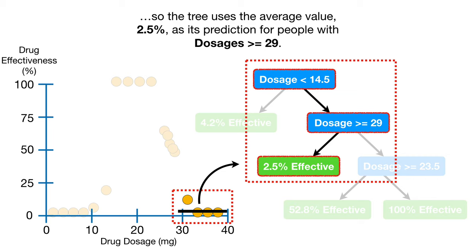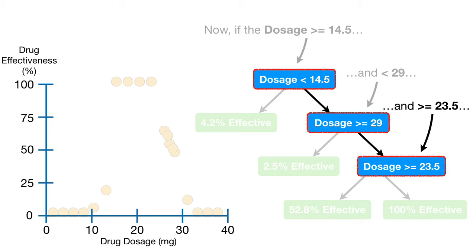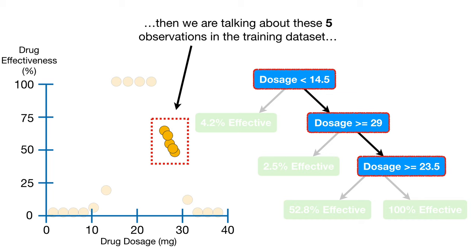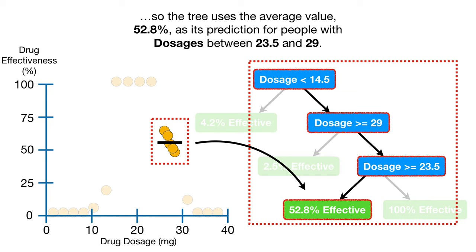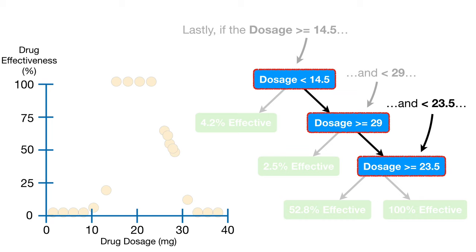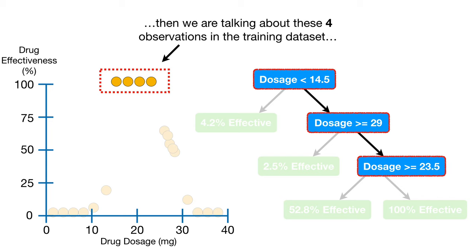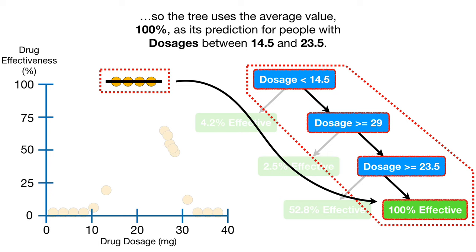Now, if the dosage is greater than or equal to 14.5 and less than 29, and greater than or equal to 23.5, then we are talking about these five observations in the training data set. And the average drug effectiveness for these five observations is 52.8%. So the tree uses the average value, 52.8%, as its prediction for people with dosages between 23.5 and 29. Lastly, if the dosage is between 14.5 and 23.5, the average drug effectiveness for those four observations is 100%, and that's what the tree predicts.